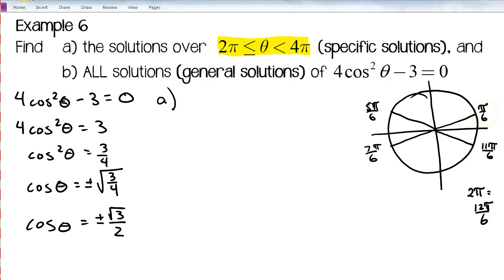So one revolution past π over 6 is going to be π over 6 plus 12π over 6, so that's going to be 13π over 6, that's going to be one of our answers. One revolution past 5π over 6, so 5π over 6 plus 12π over 6, that would be 17π over 6.